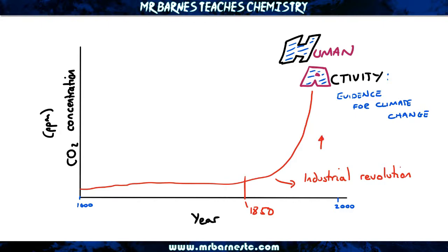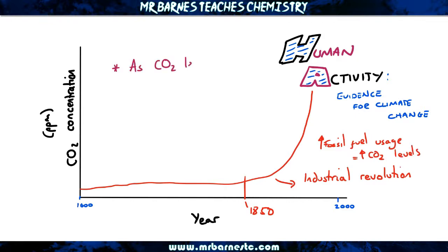What that meant was more fossil fuels were used and therefore more carbon dioxide was given out. If you were to look at the carbon dioxide levels and the average temperature levels, you would find out that as CO2 levels increase, the average temperature has also increased. This is a correlation.